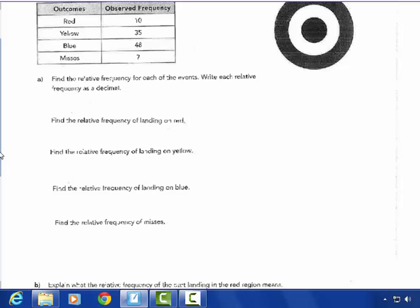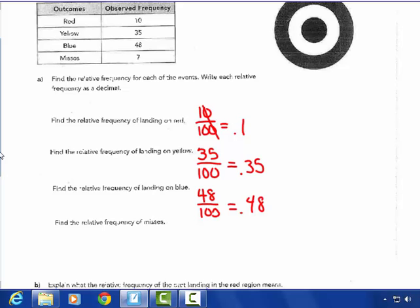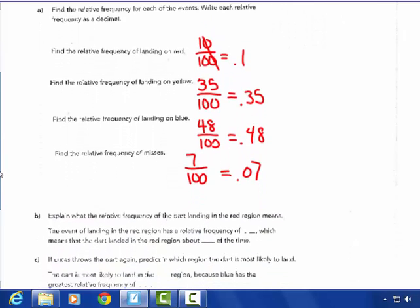Landing on red was ten out of a hundred times. So ten out of a hundred as a decimal, that's the same thing as one tenth, so that's 0.1. Landing on yellow was thirty-five out of a hundred, which is 0.35. Blue was forty-eight out of a hundred, so that's 0.48. And misses was seven out of a hundred or 0.07 as a decimal. Those were easy to answer. Wasn't that nice that it was out of one hundred?